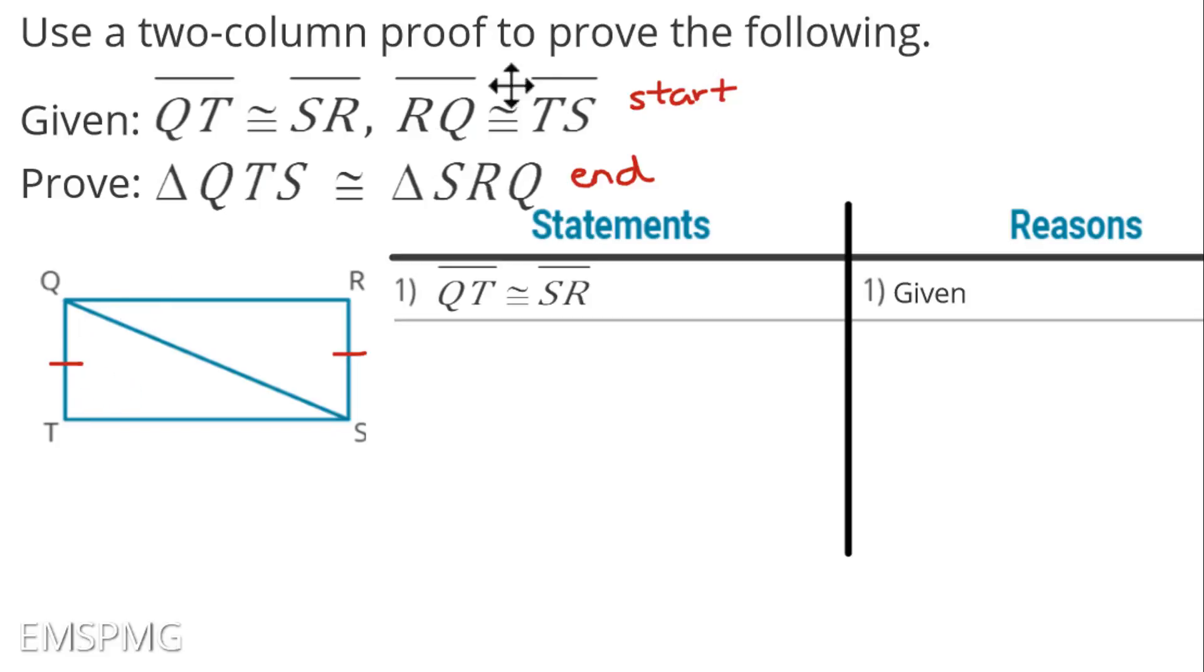Next thing, I was given another piece of information. And again, same exact process. RQ is congruent to TS. And number two, again, that is because that was given. So now I'm going to come into the diagram. And I'm going to mark RQ, but I already have used one dash. So I'm going to use a different amount. This time, I'll use two dashes to match it with TS. That is a corresponding side. So therefore, I have all of the given information in my table.